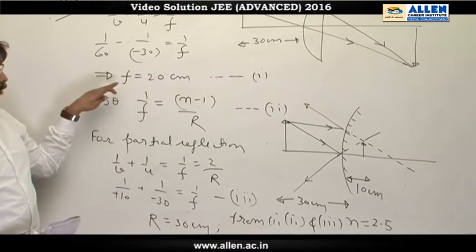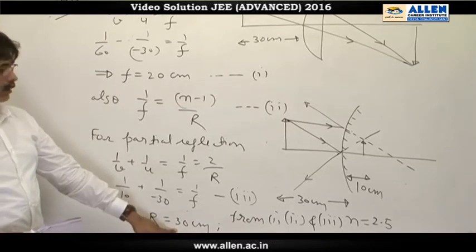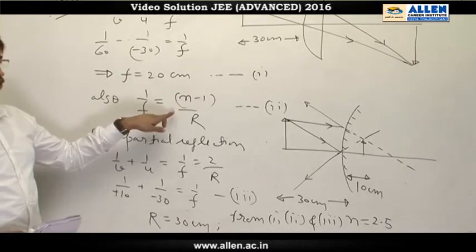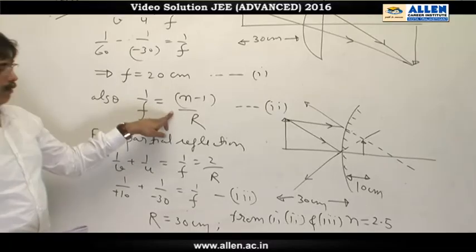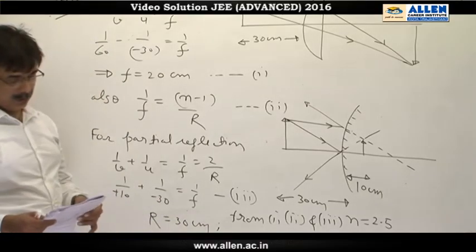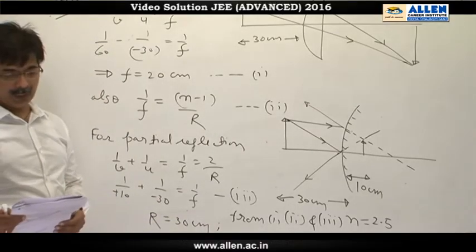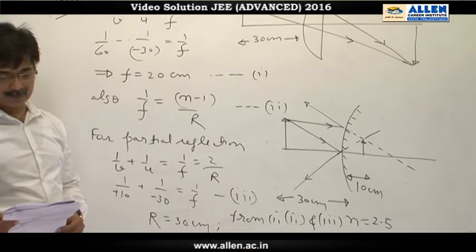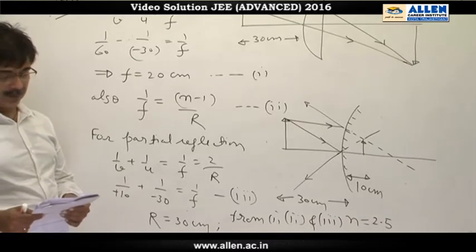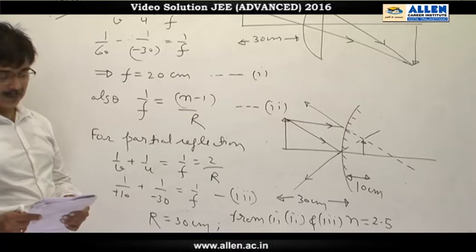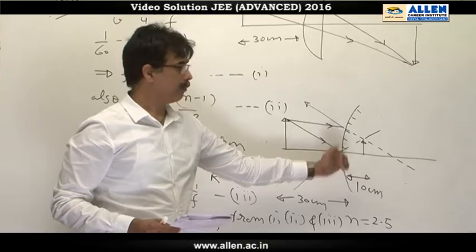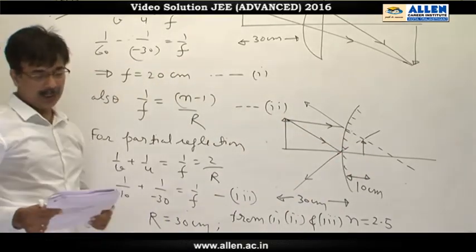So, since we know focal length of the lens, radius of curvature of the lens, on substituting focal length f and radius of curvature in the equation for focal length and solving for n, we will get n equal to 2.5. So our answers are A, refractive index is n equal to 2.5. And D, the focal length of lens is 20 centimeter. C option is wrong because faint image is erect and virtual, behind mirror. So final answers are A and B.